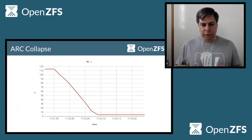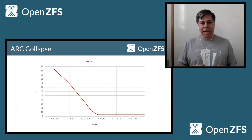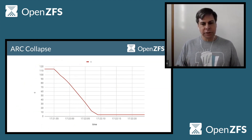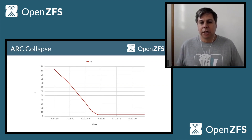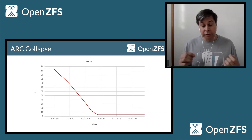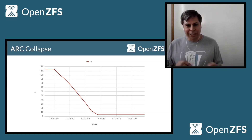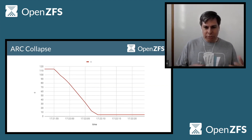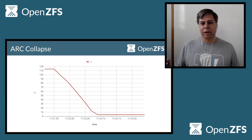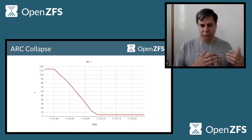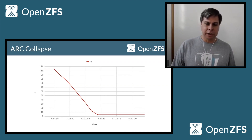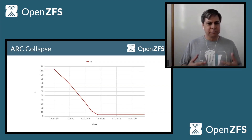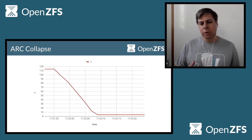What I'm showing here is a graph of the ARC — in this case, arc_c, the target size of the ARC — and what happens over a period of time. We noticed this deep drop-off, this steep decrease in the ARC size. That started us investigating really what was happening here.